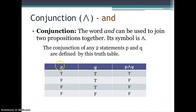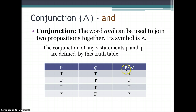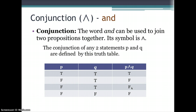The conjunction of two statements P and Q is defined by this truth table. If P is true and Q is true, then P and Q is true. If P is false and Q is true, then P and Q is false. If P is false and Q is true, then P and Q is false. If P is false and Q is false, then P and Q is false.